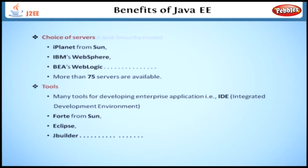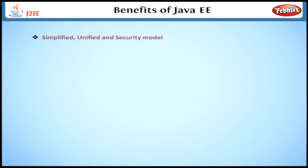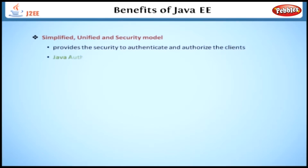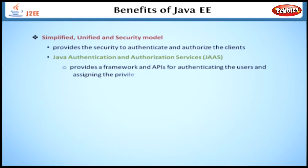Finally, a Simplified, Unified, and Security Model. Java EE provides security to authenticate and authorize the clients. We can use Java Authentication and Authorization Services, or JAAS, to provide a framework and APIs for authenticating the users and assigning privileges.